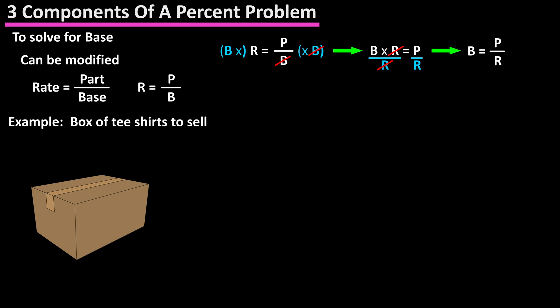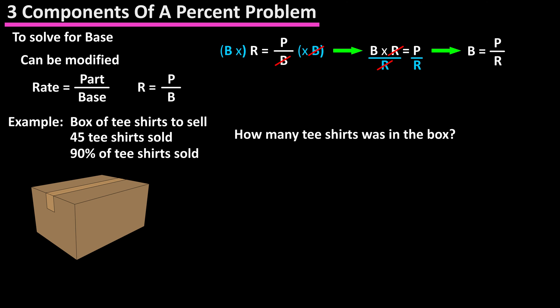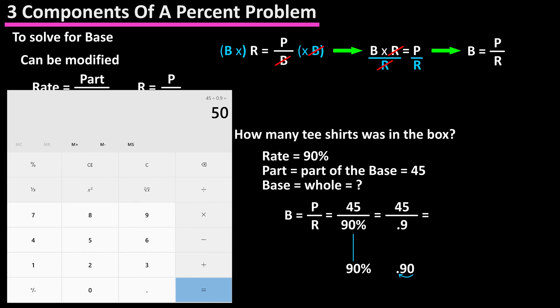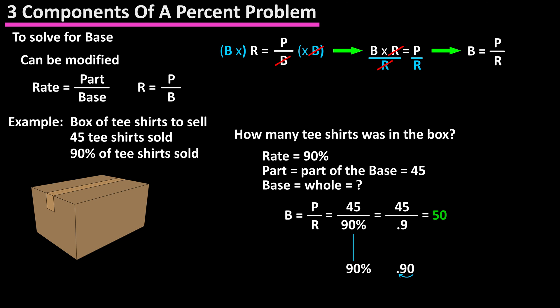As an example, let's say you gave another friend a box of t-shirts to sell. A week later, they brag about their sales skills — they say they've sold 45 t-shirts, which is 90% of the t-shirts in the box you gave them. How many total t-shirts were in the box? Here we know the rate is 90% and the part is 45. So we need to solve for the base. Base equals part over rate: 45 divided by 90%. Converting 90% to a decimal gives 0.9. Using a calculator, 45 divided by 0.9 gives a final answer of 50 — the total number of t-shirts in the box.